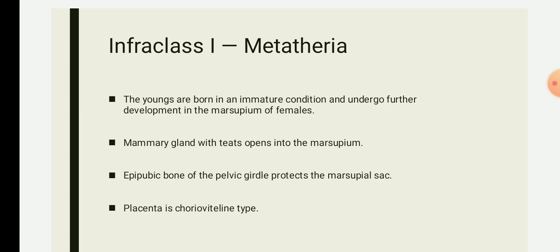Coracoid and interclavicles are absent. Corpus callosum, that part of the brain, is rudimentary or in some forms absent. Vagina and the uterus are double — this is termed the didelphic condition. Placenta is rudimentary, of the yolk-sac type.